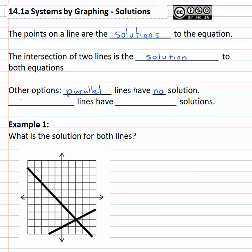It's also possible that the two lines could actually be the same line, which means they will have infinite solutions. Because any point that works on one line also works on all the other points.